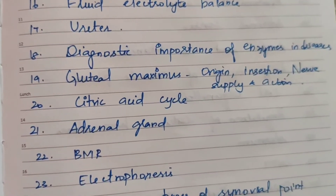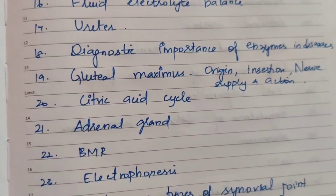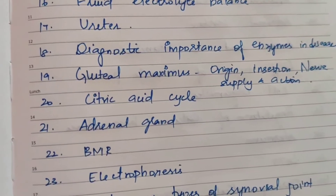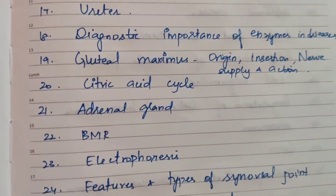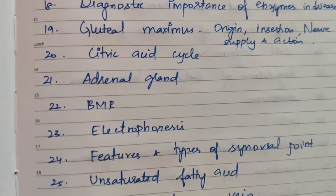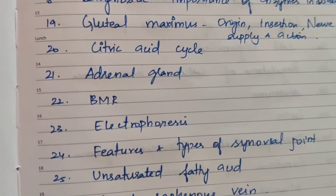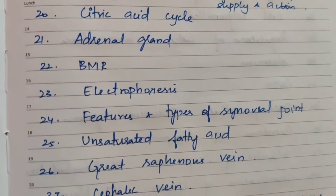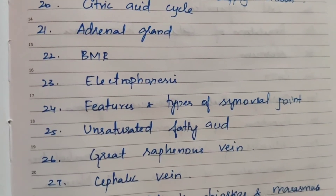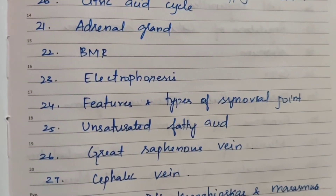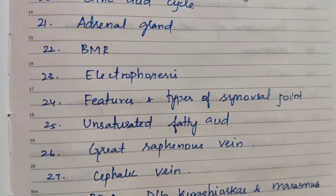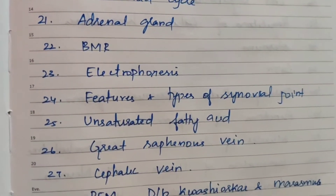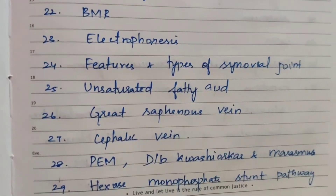Further 5-mark topics: gluteus maximus — origin, insertion, nerve supply, and action; citric acid cycle; adrenal gland; basal metabolic rate (BMR); and electrophoresis.